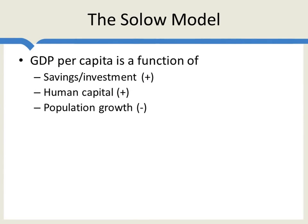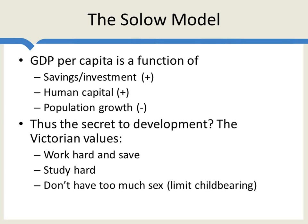From our previous lectures, we know that in the Solow model, GDP per capita is a positive function of savings or investment, a positive function of human capital, and a negative function of population growth. From this point of view, the secret to development is quite simple — what Bill Easterly has called the Victorian values: work hard and save, study hard, and limit childbearing. Let's see if some data backs up these predictions.